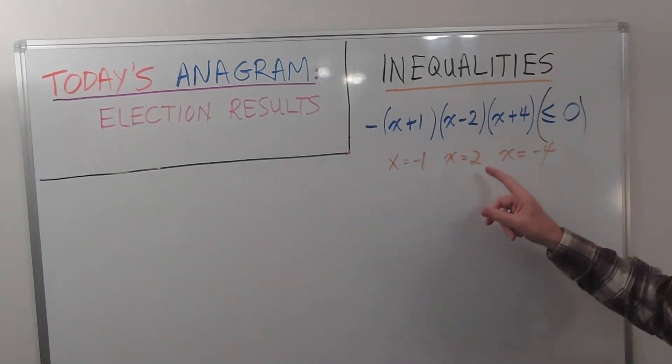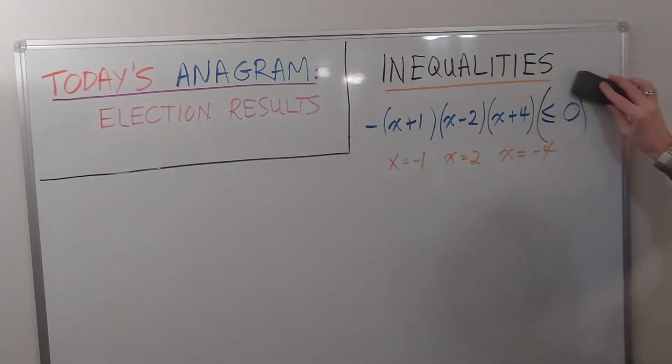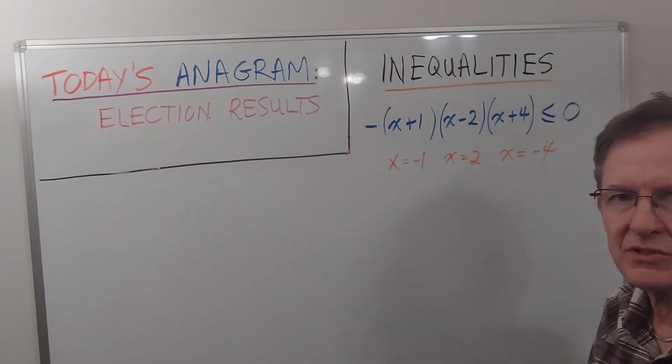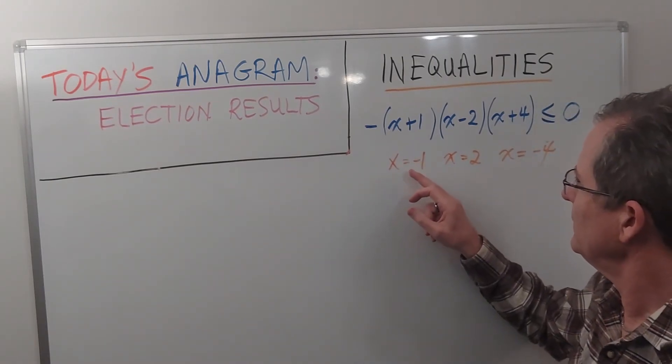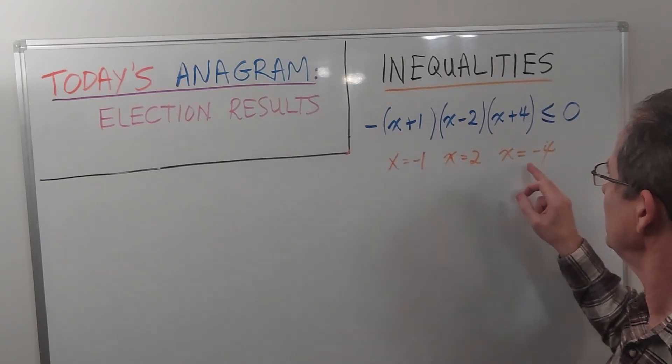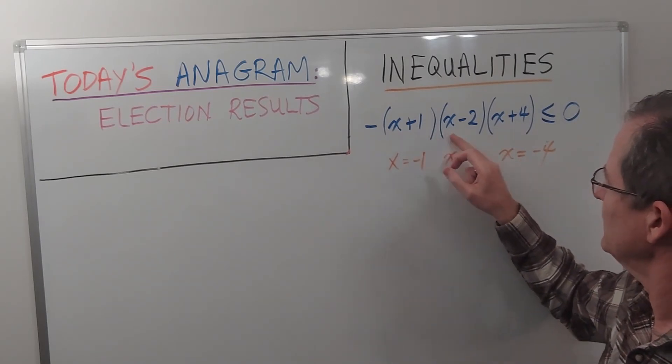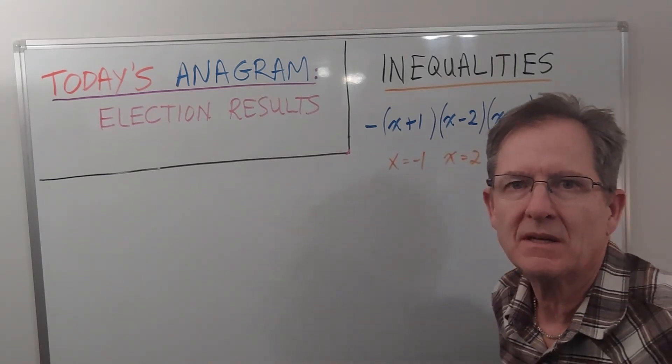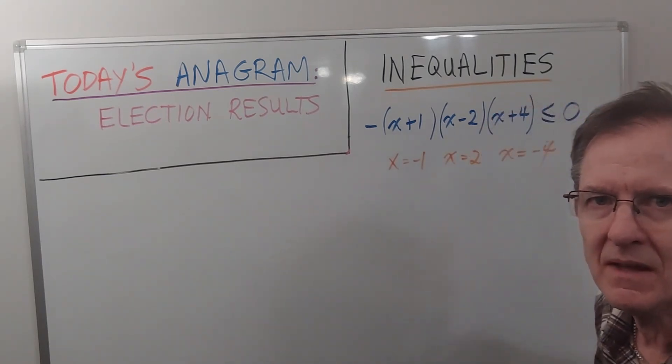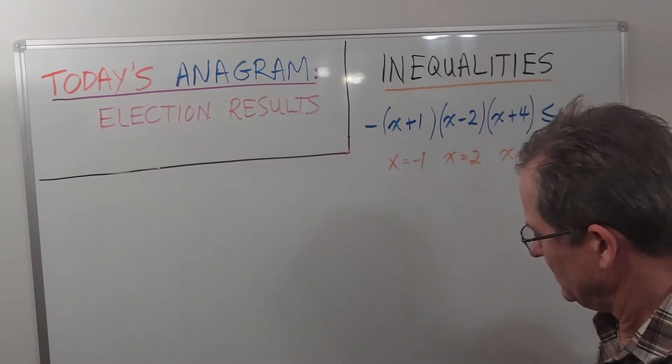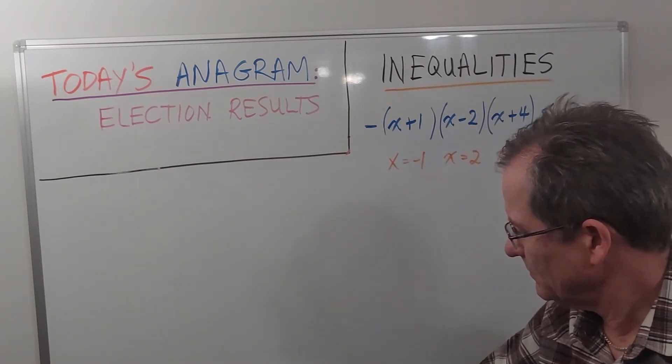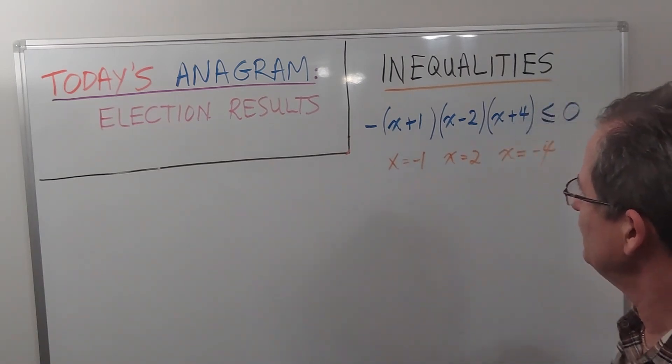Let's look at this inequality one last time, for the third time. We said in the last video when we graphed the solution, that the key x's are negative 1, 2, and negative 4, because those numbers make these terms 0. And now let's use test points to figure out the same solution.